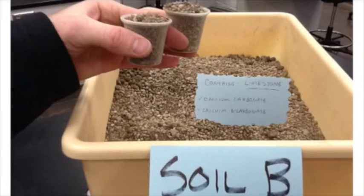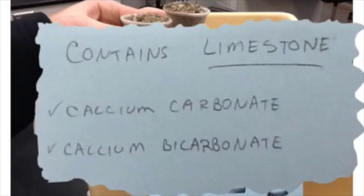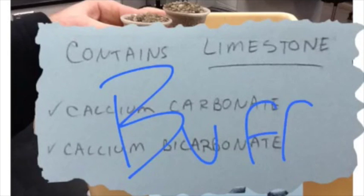This time using soil B. Soil B is similar to soil A, except that it contains limestone, which has within it calcium carbonate and calcium bicarbonate, which are going to act as a buffer. And you'll see what effect that's going to have on the pH.